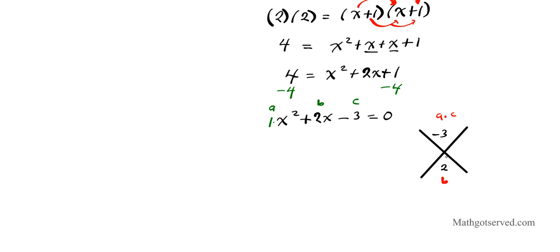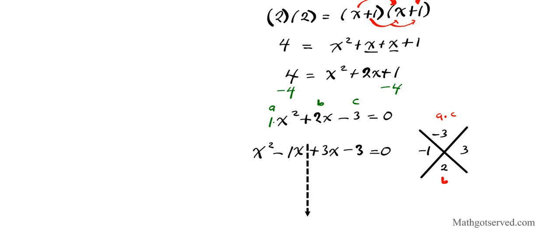We need two numbers that multiply to give negative 3 and add to give 2. Let's try 1 and 3 — since the product is negative, the smaller must be negative, so we use negative 1 and positive 3. Putting that in, I have x squared minus x plus 3x minus 3 equals 0. I've split the middle term into two so I can factor by grouping.